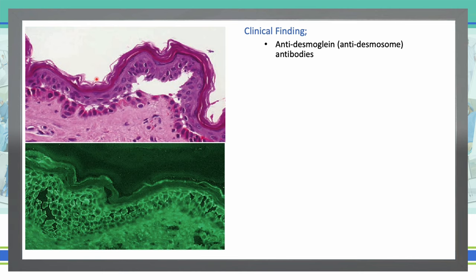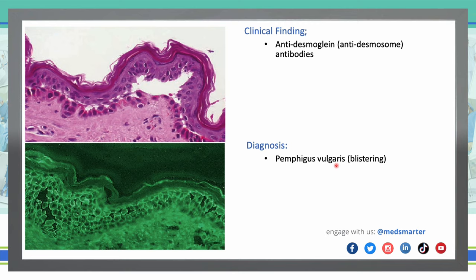Anti-desmoglein, anti-desmosome antibodies. Desmoglein is a cadherin-like adhesion molecule that functions to maintain tissue integrity and facilitate cell-to-cell communication. We see these antibodies in pemphigus vulgaris, and in that condition we see blistering.